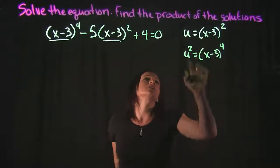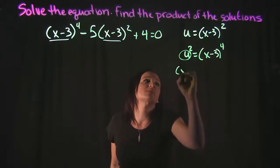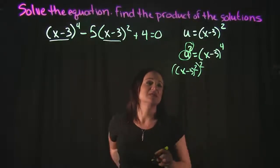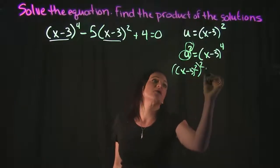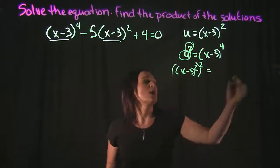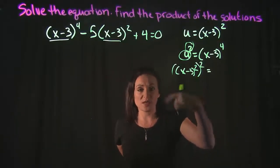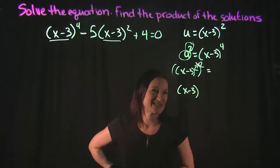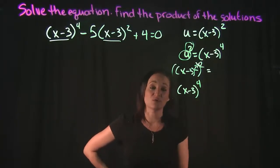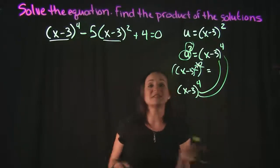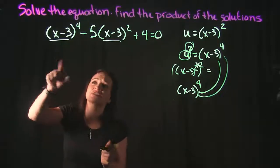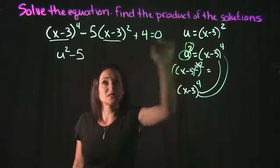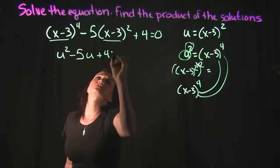Here's why: if u equals x minus 3 squared, then u squared equals x minus 3 squared, all squared. By the power rule, when you raise a power to a power you multiply the exponents, so 2 times 2 equals 4, giving x minus 3 to the fourth. So the equation becomes u squared minus 5 times u plus 4 equals 0.